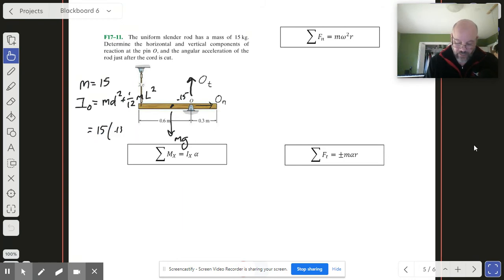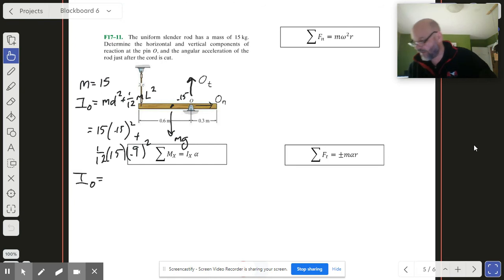So we put some numbers in on that thing. We got 15 times 0.15 squared plus 1/12 times 15 times 0.9 squared. I got a little bit crampy there but when you work all of that out you get that the moment of inertia there is 1.35.